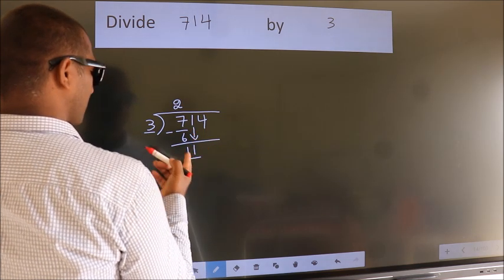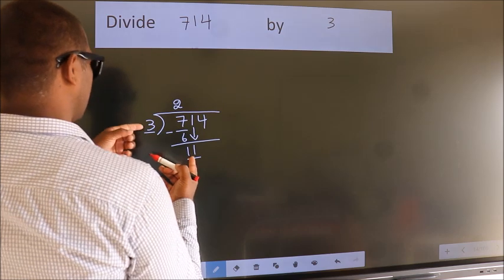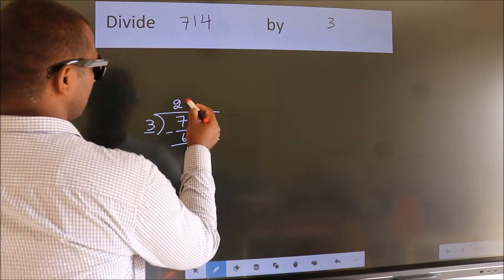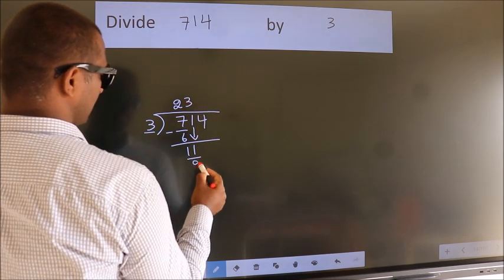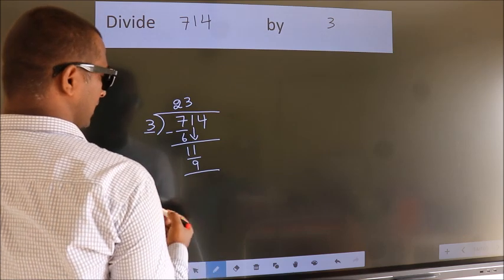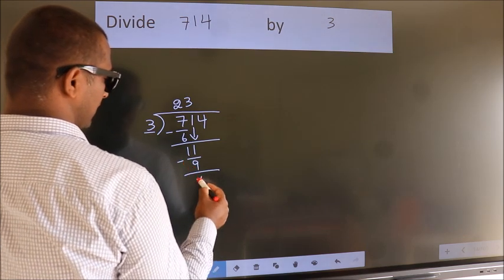So 11. A number close to 11 in the 3 table is 3 times 3 equals 9. Now we subtract. We get 2.